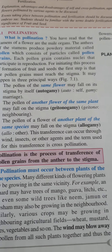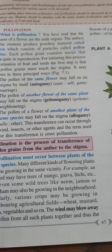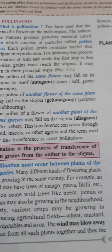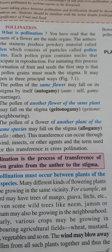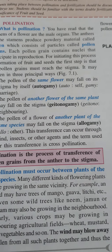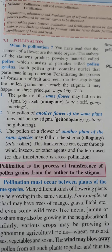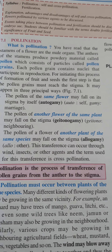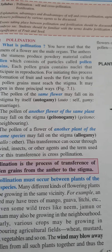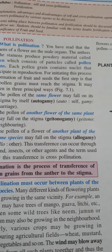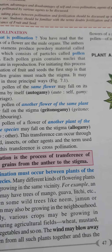Opening and exposure of anther and stigma are necessary for autogamy — yaani ki environment mein dikhna, expose hona — dono hi situation anther aur stigma ke liye zaroori hai. Tabhi yeh autogamy ho sakta hai. Autogamy ke liye do conditions bahut zaroori hain. Pehla: anther-stigma synchronization — when the pollen is released, stigma should be ready to receive.